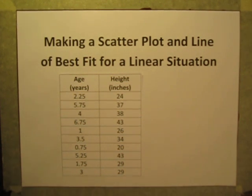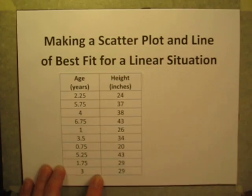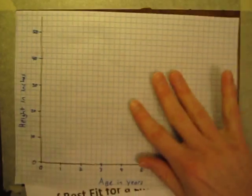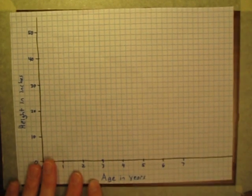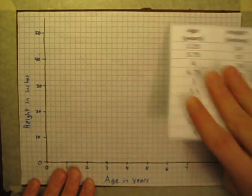So the first thing we'll do is we're going to take each of these children and plot them on a graph. So we'll put age in years on the x-axis, height in inches on the y-axis, and we'll have a graph that looks like this.